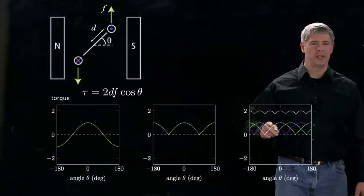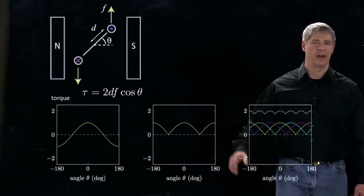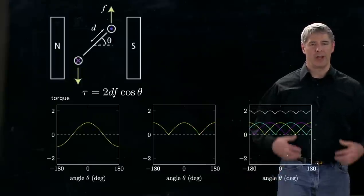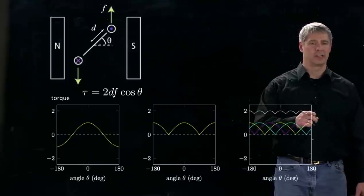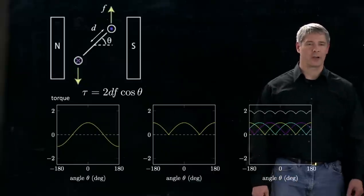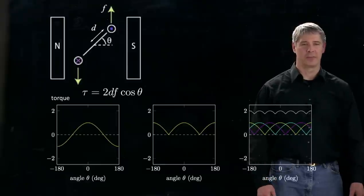Here's the contribution from each loop. We get three figures that look like this but offset by 120 degrees, and if we add them all up to get the total torque, then we get a torque that looks like this. You can see now that torque is not quite constant but it's much more constant as a function of angle, so we're getting something that starts to look like a motor.